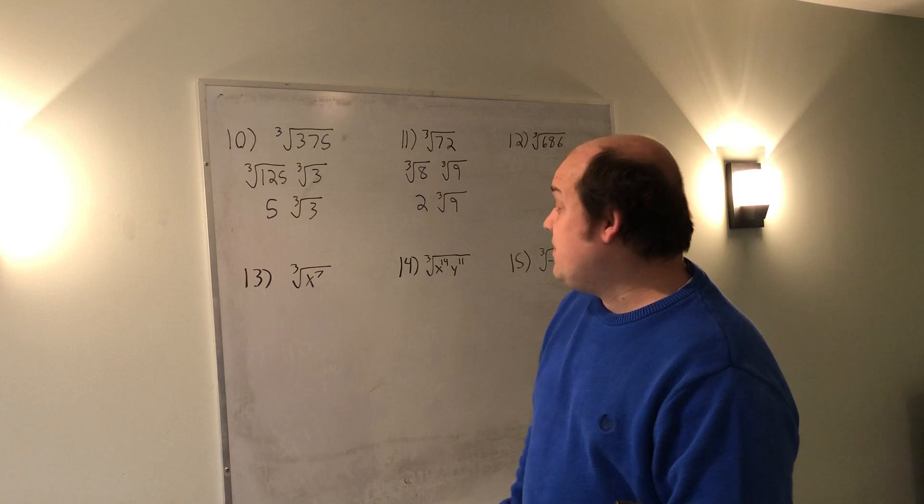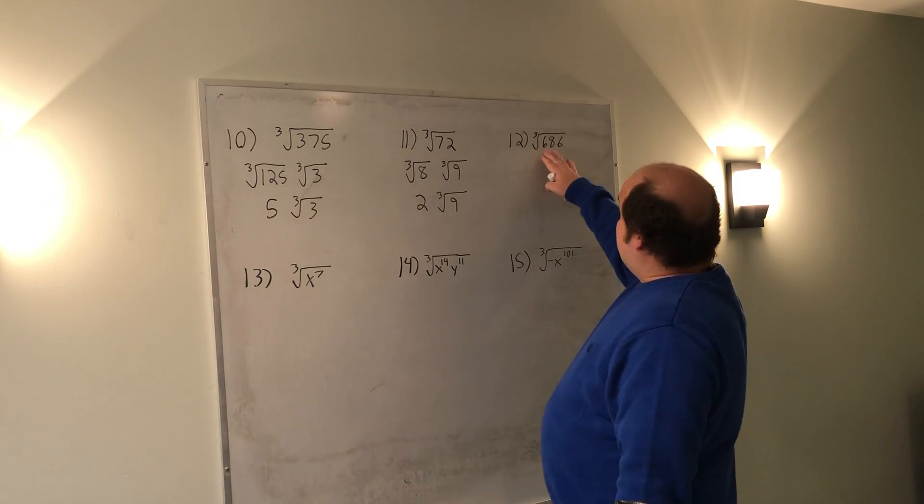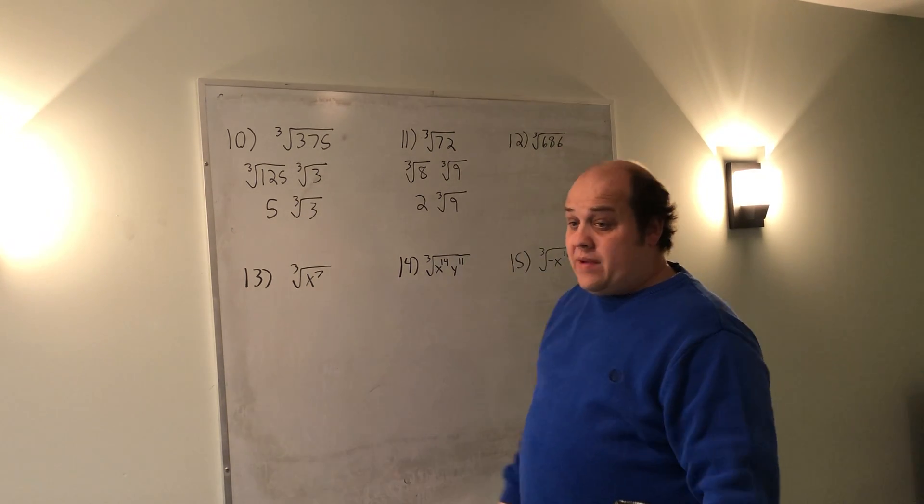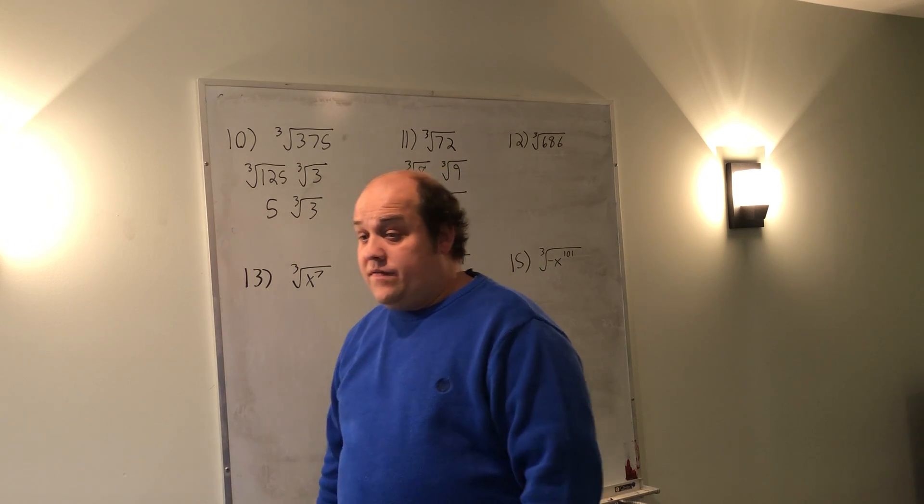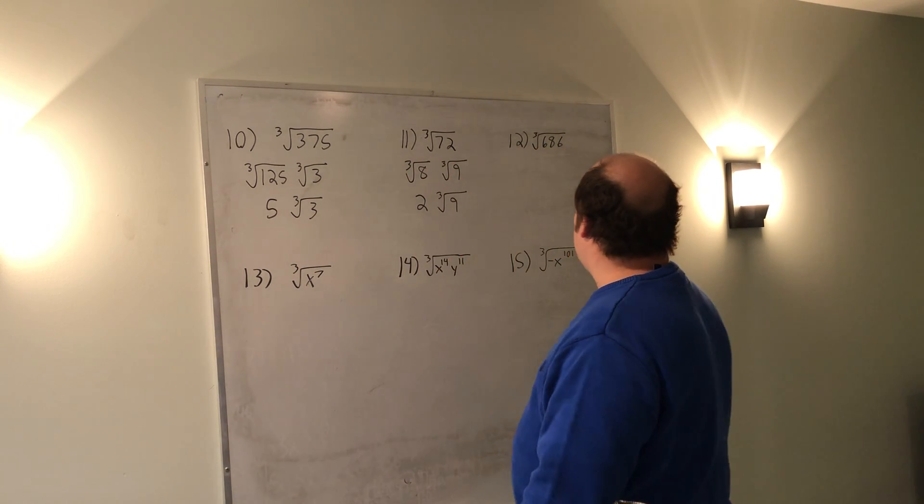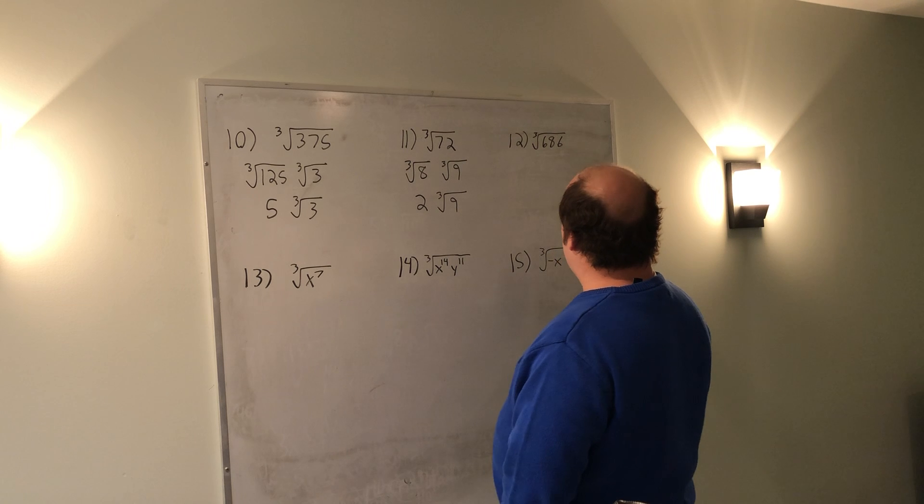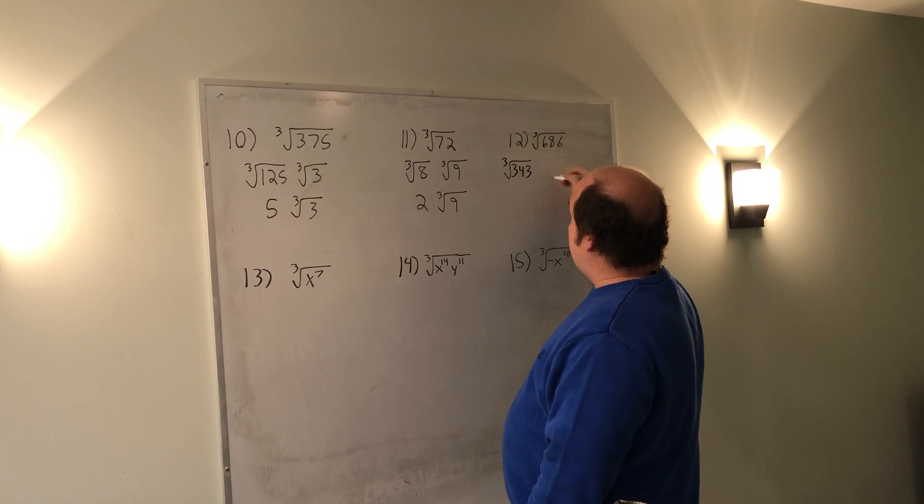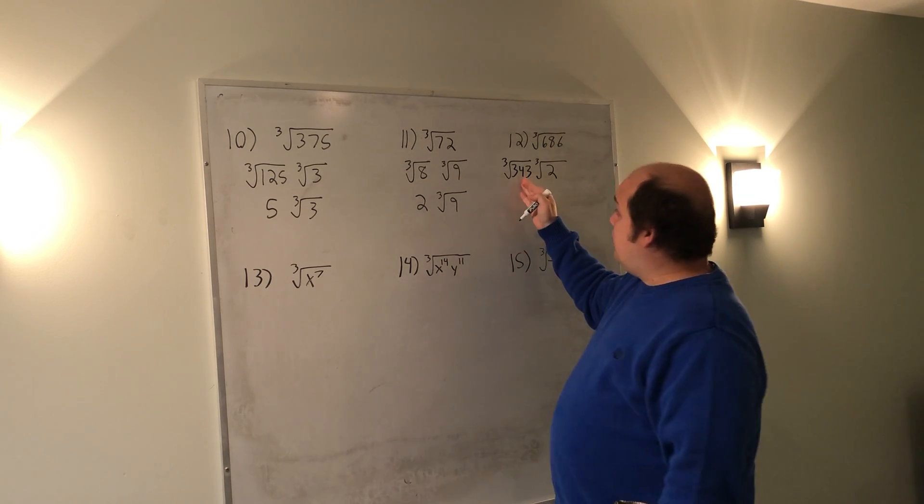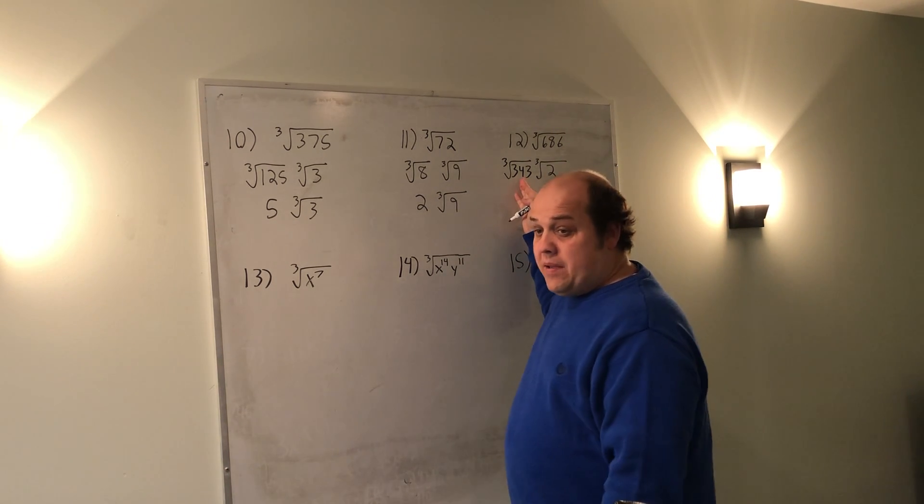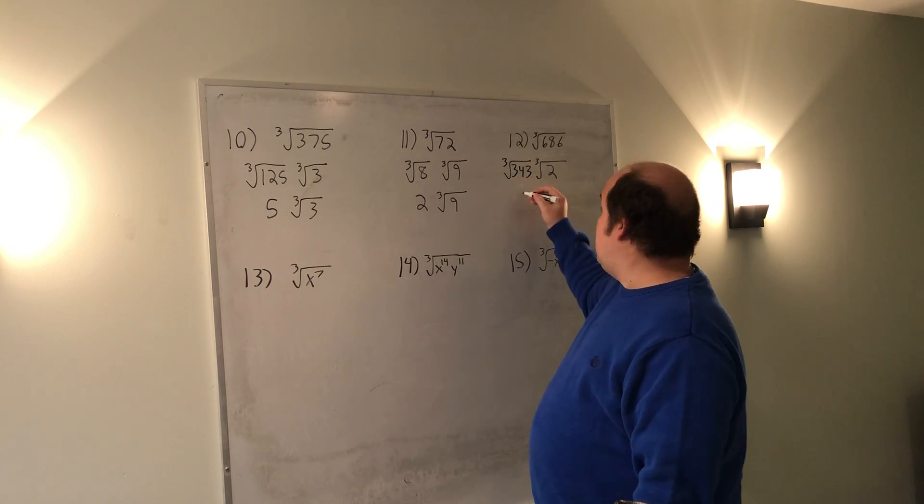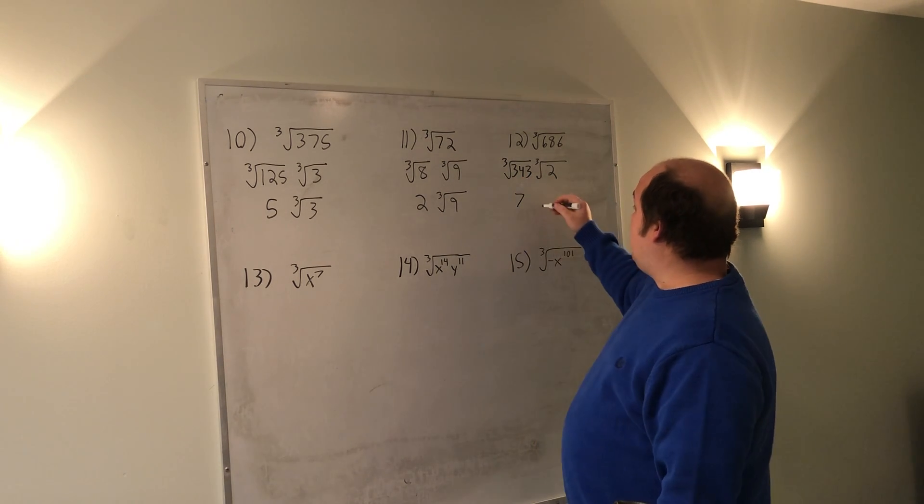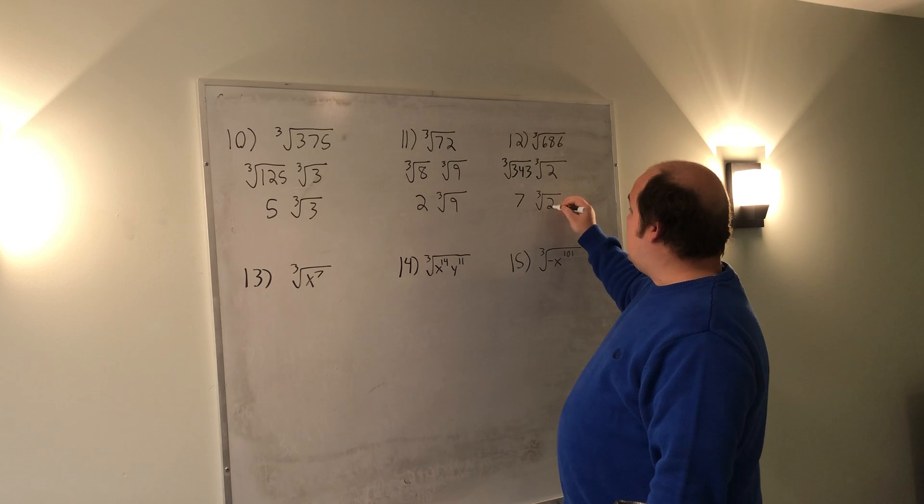Number 12 is 686. So on my list I can start at 512. It doesn't work, but when I go to do 343 it does work. It goes in twice. So this becomes the cube root of 343 times the cube root of 2. Again, I look to the left of 343 in my paper and see that 7 is the cube root of 343, leaves behind a cube root of 2.